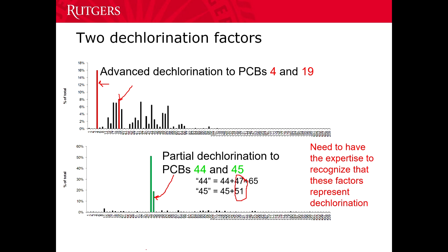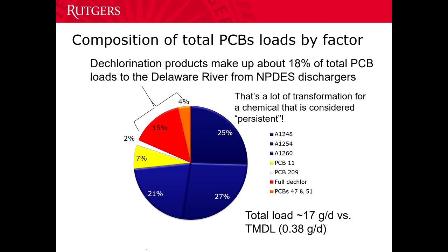That's indications that dechlorination did occur in the real world. You also get the abundance of each fingerprint in every single sample. In the composite across all samples, the three Aroclor fingerprints are about three-quarters of all PCBs being emitted. The pigment-associated factors are about 9%. But the dechlorination fingerprints — the orange and red — are almost 19% of total PCB loads to the Delaware River from these NPDES permitted dischargers. That's a lot of transformation for PCBs which are considered to be persistent.